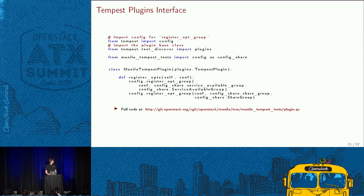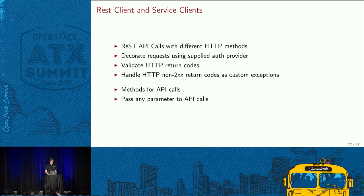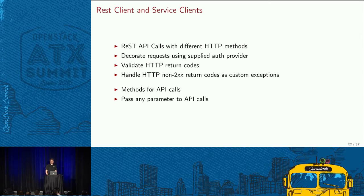This is an example from Manila of how the plugin looks. In the top line, all you need to import is the plugin from tempest.test.discover. If you want to use the register_opt_group method, you can import it from tempest.config as well. Once your plugin structure is in place, you may need to write your own service client. That's not necessarily the case for all plugins, but in most cases the plugin will be associated with a dedicated service and you'll need an extra service client.